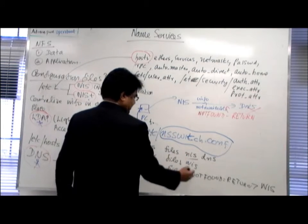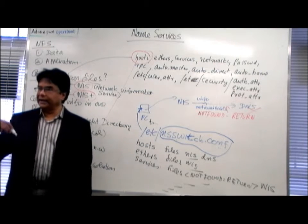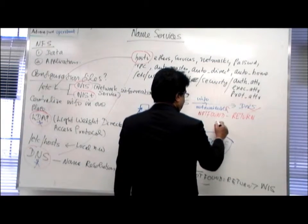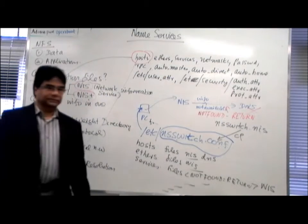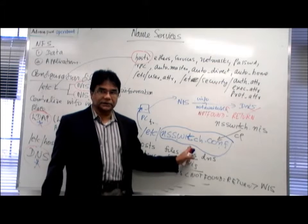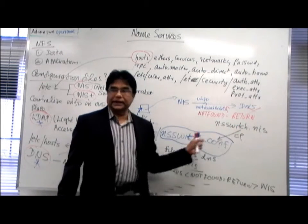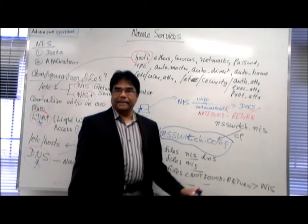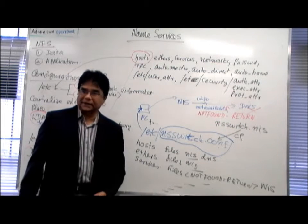If I want NIS for everything, rather than opening the NSSwitch.conf file and modifying each line one by one using a text editor, I will copy a template file called NSSwitch.NIS to NSSwitch.conf. Whatever information is in that template file will overwrite this file. The computer will read only NSSwitch.conf — the template file is not read directly. So rather than changing lines one by one, I copy the whole thing.